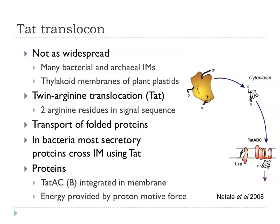The TAT system relies on a complex of TatA and TatC integrated into the membrane. There is an accessory protein TatB found in some bacterial species but not all. The energy for translocation is not driven by ATP; instead it is driven by the proton motive force. The ribosome produces the protein, it is delivered to TatA and TatC, and goes through the system to come through to the other side.